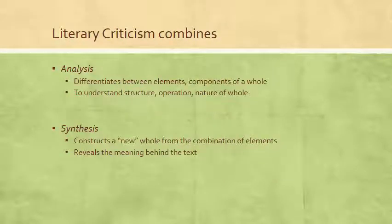Another way to put this is to say that literary criticism combines two tasks: analysis, which is when you differentiate between the elements or components of a whole — breaking down something that appears as one whole object into its parts — in order to understand the structure, the operation, and the nature of the whole. And you're also doing what we call synthesis, where you're constructing a new whole from the combination of elements, revealing the meaning behind the text. In analysis you break it down; in synthesis you show how the parts add up to some new, unspoken meaning that goes beyond the literal level of the text.